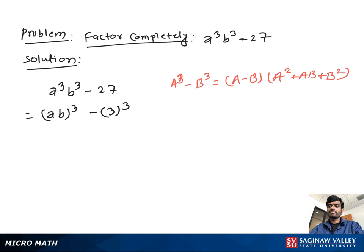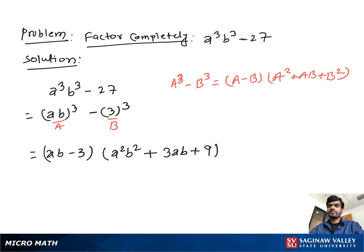If we suppose ab as a and 3 as b, then we can write (ab minus 3) times (a²b² plus 3ab plus 9), and this is our final complete factorization.